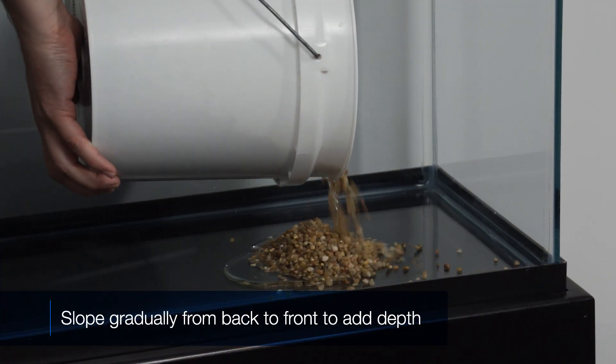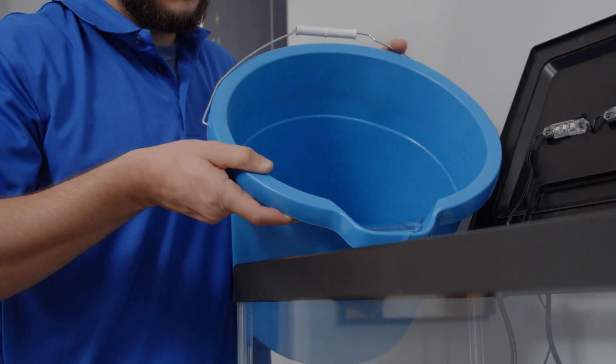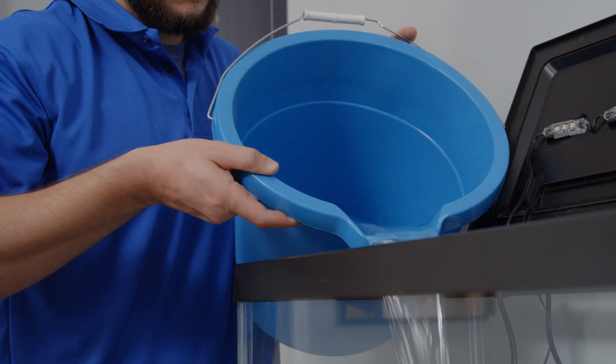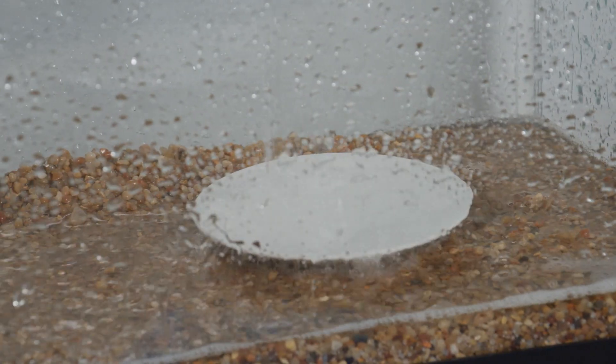Next, add one to one and a half inches of gravel to your tank, and fill a third of it with room temperature water. Pouring the water onto a plate or saucer will keep your gravel in place.